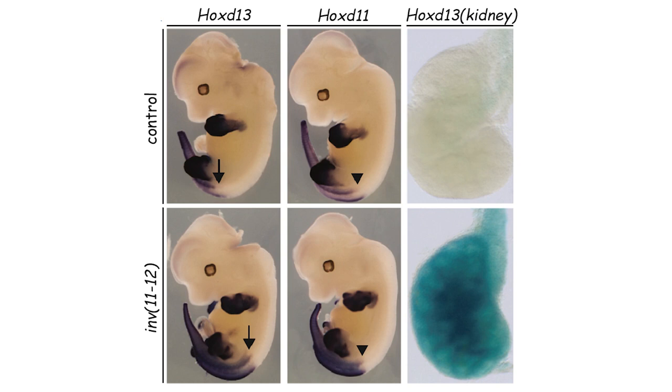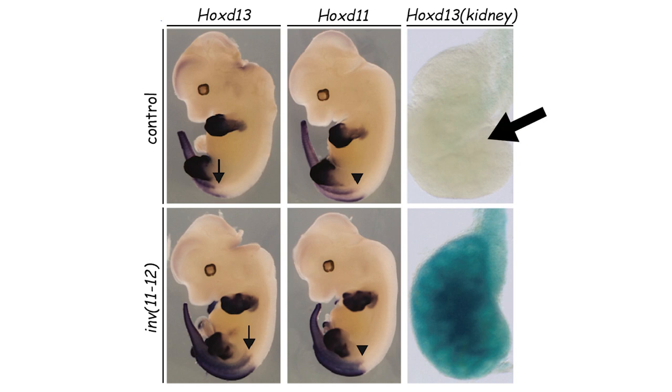Flipping Hox gene 12 alone didn't reveal anything really fascinating about how timing is regulated. That's when they flip two genes around — both Hox gene 11 and Hox gene 12 — and there was also a DNA insulator right outside of Hox gene 12 that they took and flipped around as well. What happens when they do that? Going back to the in situ hybridization and looking at expression of Hox 13 and 11, Hox 13 seems to have expanded much higher up, and 11 looks maybe a little higher but pretty much in the same location. In fact, if you look at the kidneys, you now have Hox gene 13 expression there — which you're normally not supposed to have.